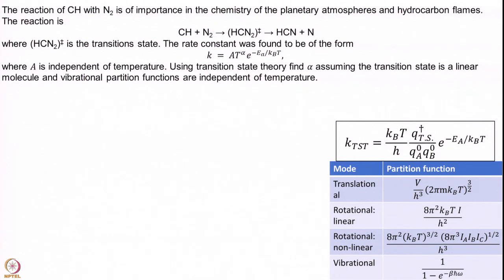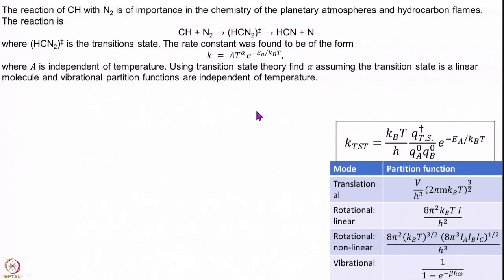The next problem: there is a reaction of atmospheric chemistry importance — CH plus N₂ going through a transition state to HCN plus N — and people experimentally found that the rate constant fits the formula k proportional to T to the power of alpha times e to the power of minus Ea/kT. Using transition state theory, estimate what alpha must be, assuming the transition state is linear and that rotational, vibrational, and electronic partition functions are independent of temperature.